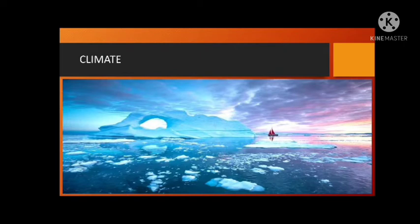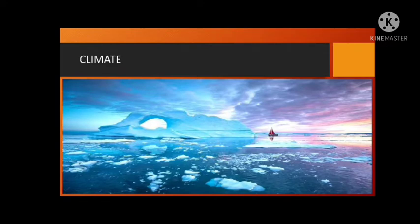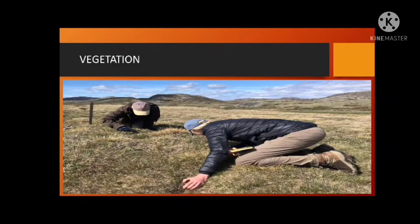Chilly winds blow at high speeds of above 150 kilometers per hour. Winters are long, cold, and dark. Summers are cool and short. The winter remains bright and sunny especially in the coastal areas. Moving towards the interior, there is continuous daylight for several weeks, yet it is very cold.